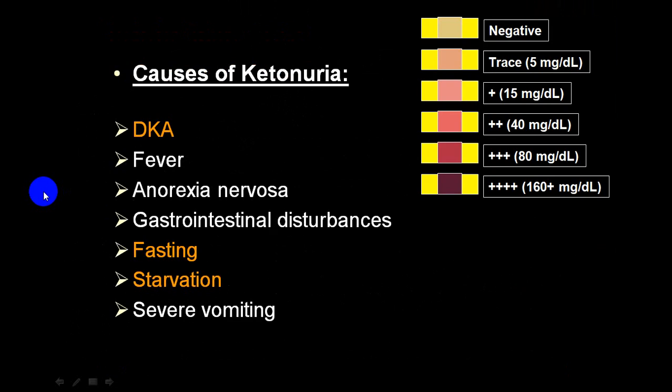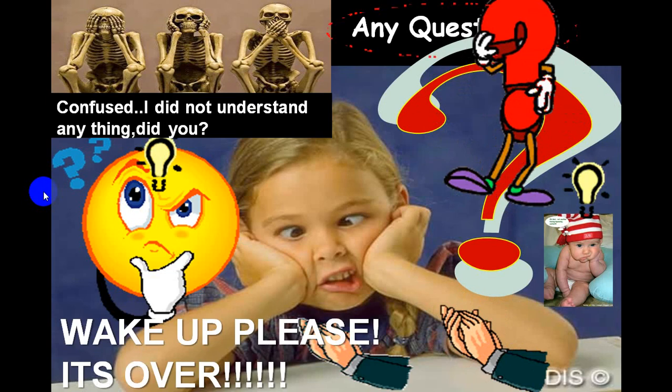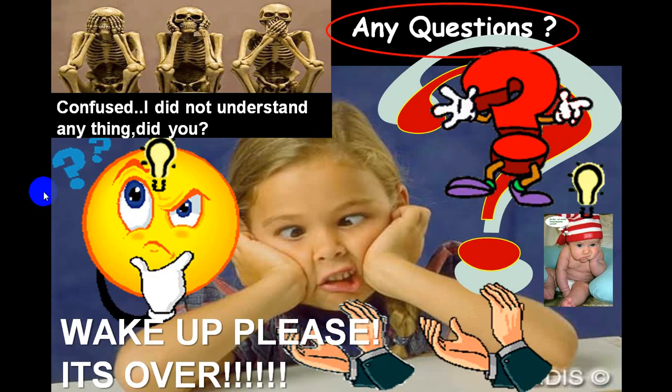Ketone bodies can be present in cases of diabetic ketoacidosis, prolonged fever, anorexia nervosa, gastrointestinal disturbances, prolonged fasting, starvation, severe vomiting, and hunger strike. This concludes the topic of glycosuria.